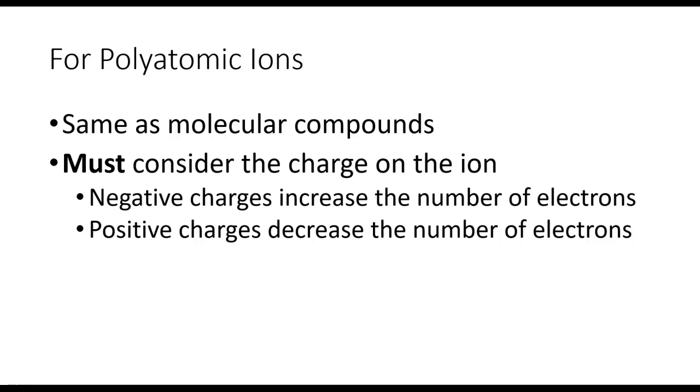Let's take a look at how we make polyatomic ion Lewis structures. The process is actually the same as what we do for molecular compounds, except we must consider the charge on the ion. That's going to change the number of electrons in the formula. Negative charges increase the number of electrons, because remember, electrons are negative. Positive charges decrease the number of electrons. We'll look at examples of both.